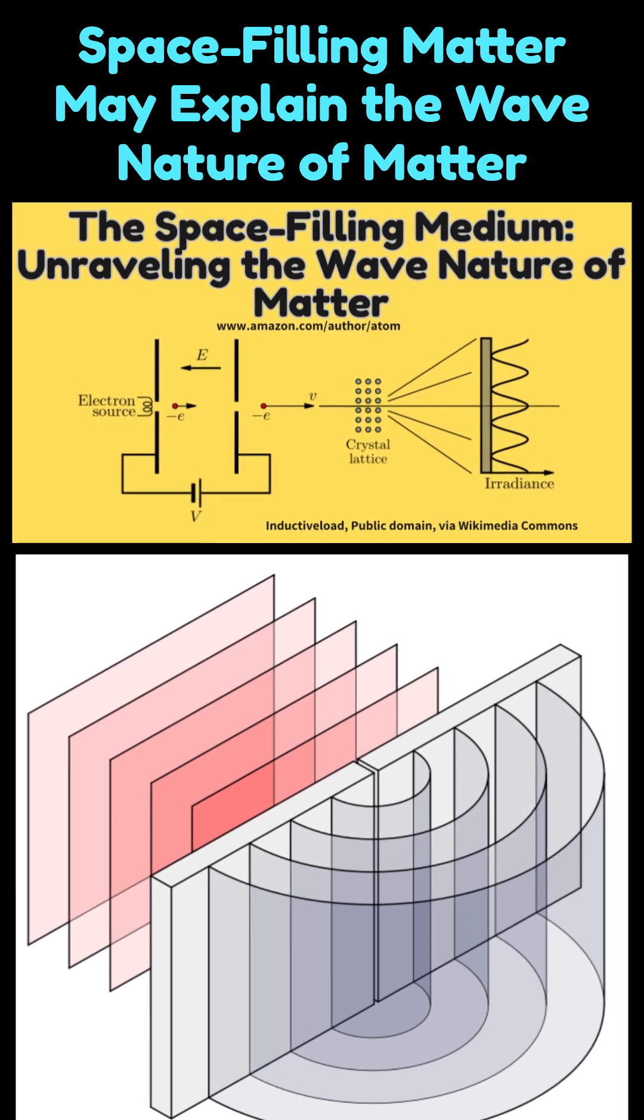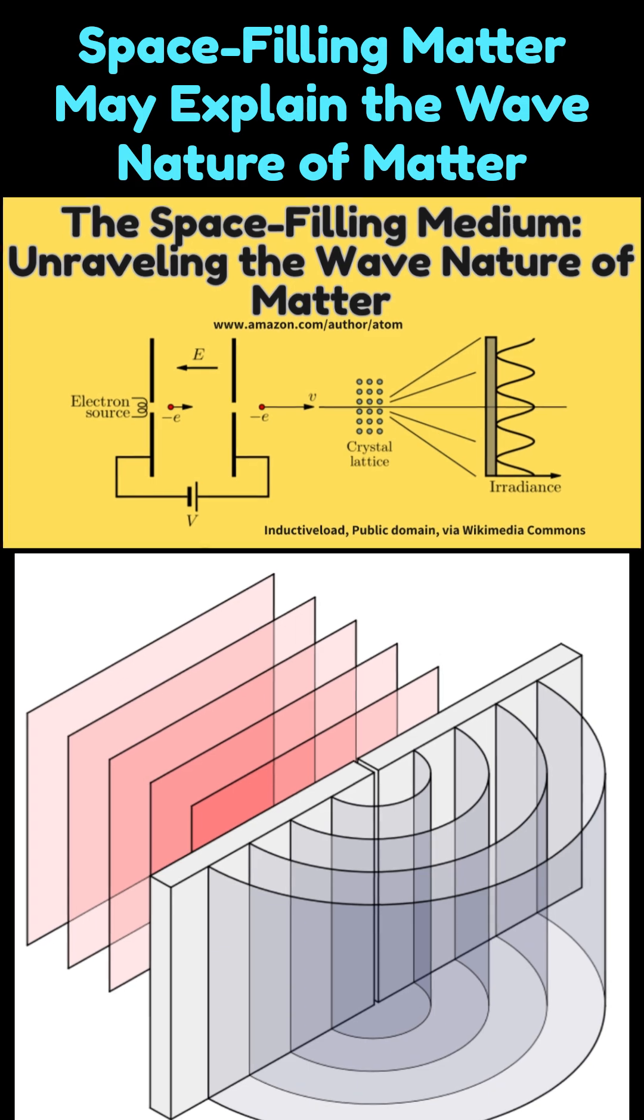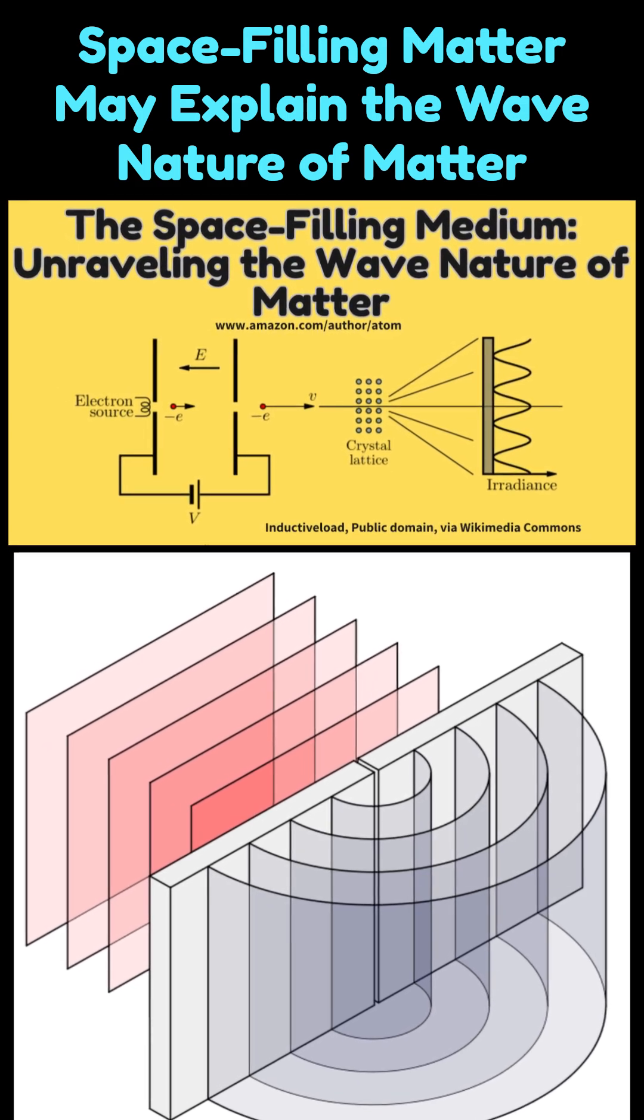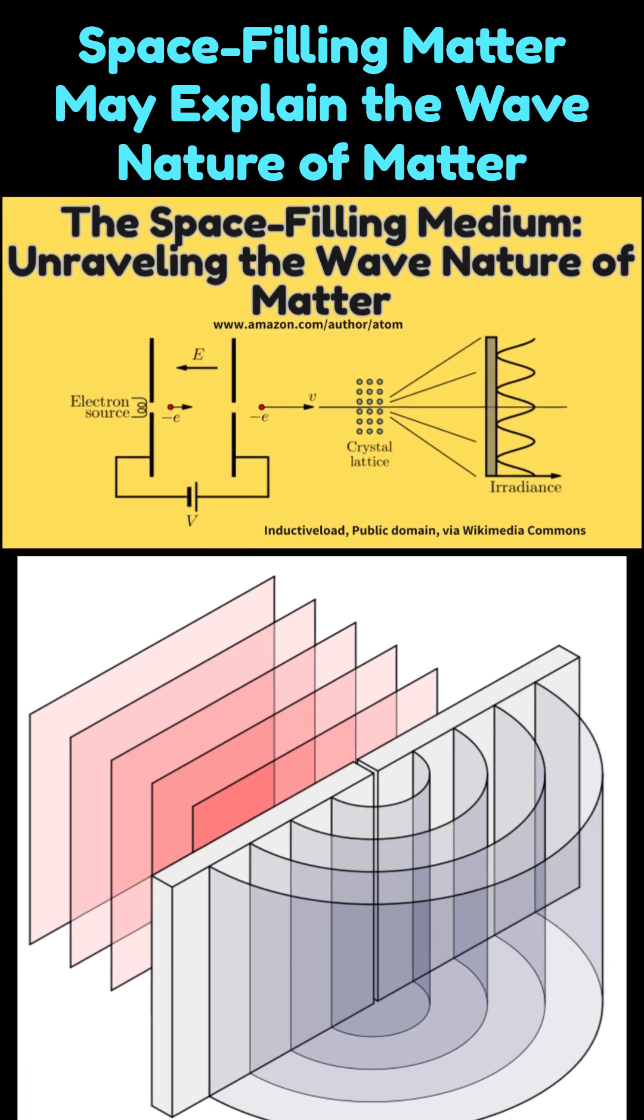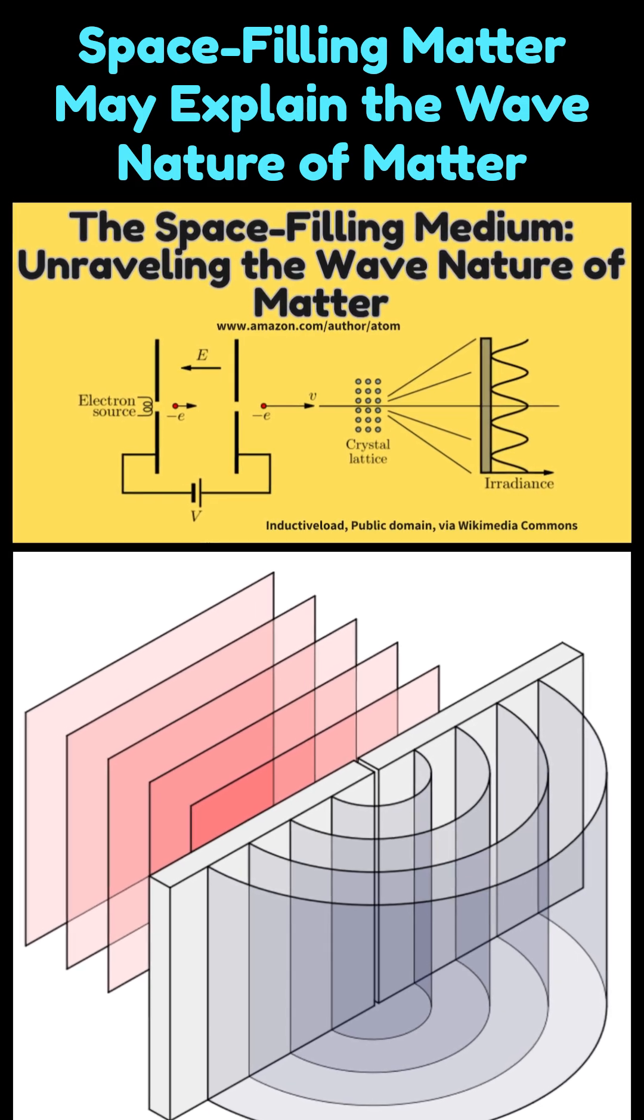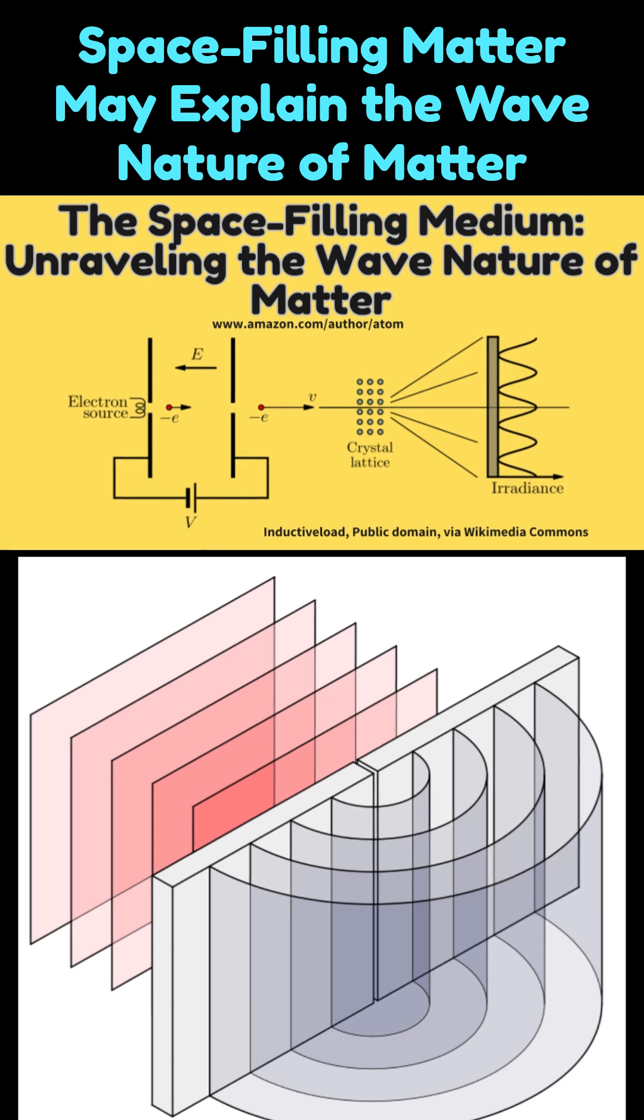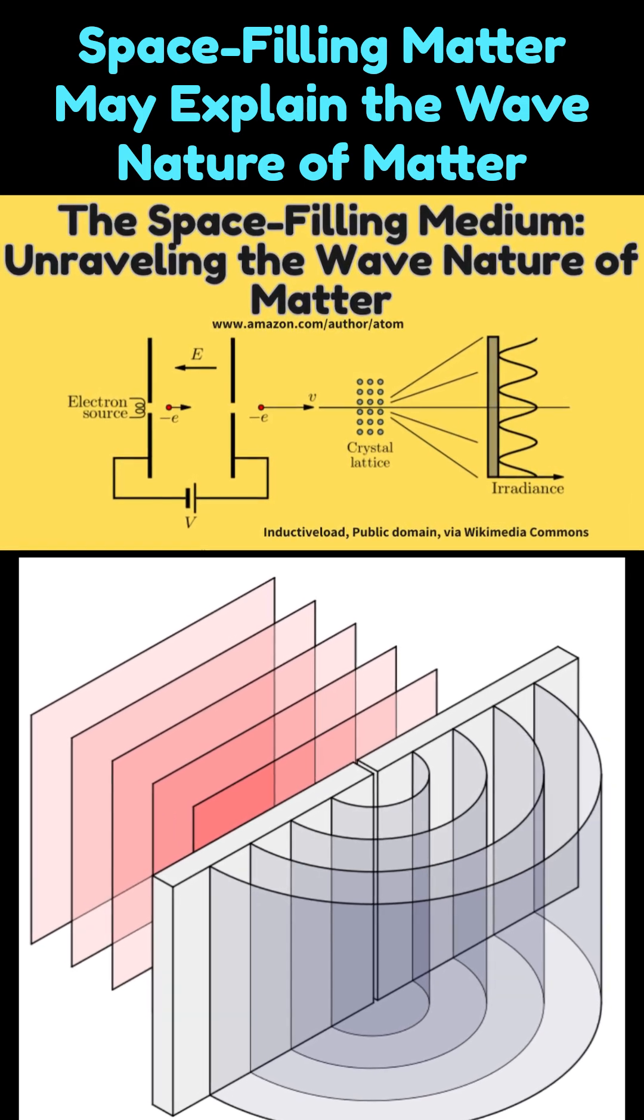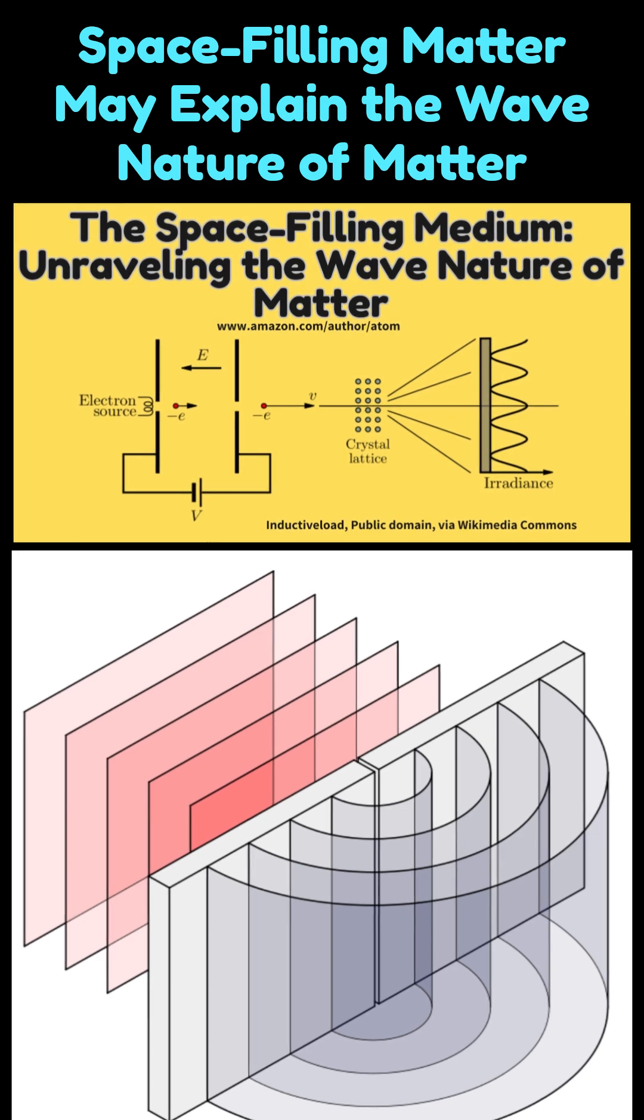with the surrounding space-filling matter, causing its trajectory to deviate from a straight path. Now consider a beam of electrons: when accelerated by a specific voltage, all electrons in the beam follow nearly identical trajectories. If this beam is directed through a double slit apparatus, the electrons will interfere constructively or destructively, exhibiting wave-like behavior akin to that of light.